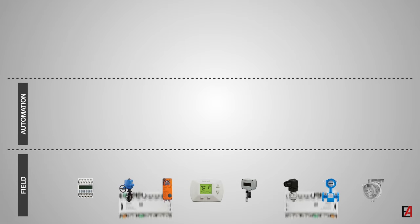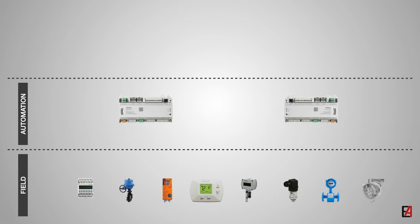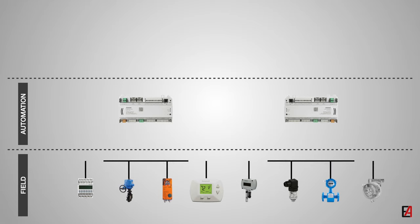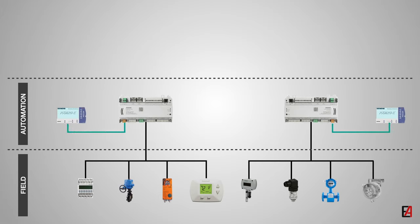Next is the automation level. This can be called the brain of the building management system. It consists of compact and modular DDC controllers. The DDCs process the inputs from the field devices and take action to provide comfort to the building occupants and safety and security to the building equipment. The DDCs are freely programmable. The controllers can be connected to a handheld operator terminal to control or monitor the field equipment at the field level without the requirement of the management system.